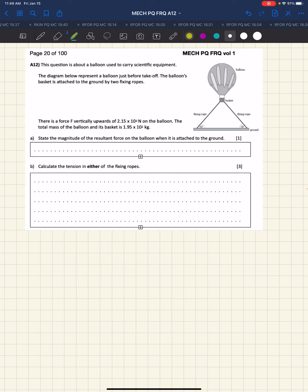In this question we see a balloon with a basket or gondola that looks like it's tied to the ground at an angle, just before takeoff. It's attached to the ground by two fixing ropes. The force vertically upwards, which is the force buoyant, is 2.15 times 10 to the third or 2150 newtons, and the mass of the balloon and basket is 195 kilograms.